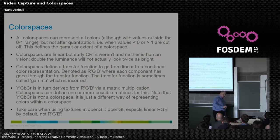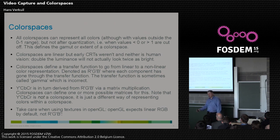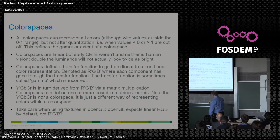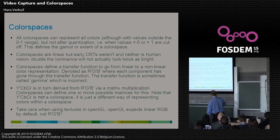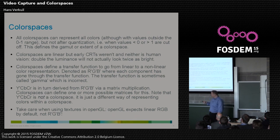YCbCr, contrary to what 90% of all documentation says, is NOT a color space. It's a different encoding for a color. How to interpret those values — what color they add up to — that is what the color space does. OpenGL, if you use it, by default expects linear RGB — without the transfer function. Since most pictures you get, like JPEGs, have the transfer function applied (non-linear RGB), you need to tell that to OpenGL. If you don't, the image is misinterpreted.